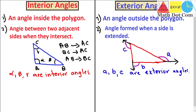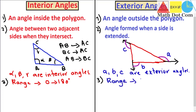The third difference is the range of the angles. Interior angles range from 0 to 180 degrees — so alpha, beta, and gamma will always have a value between 0 and 180 degrees and cannot exceed this. The range of exterior angles is 0 to 360 degrees.